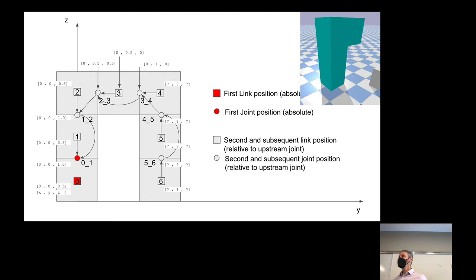Why would PyBullet make your life so complicated? Why mix absolute and relative coordinates rather than just specifying all positions with absolute coordinates? It's easier in certain scenarios to imagine things relative to each other rather than relative to the entire simulation. As you're starting to build up a robot, it makes more sense to think of relationships relative to one another rather than relative to the world as a whole.